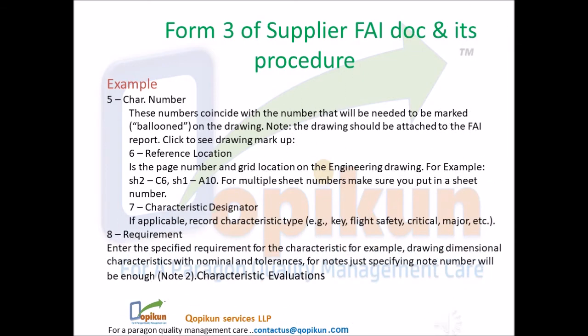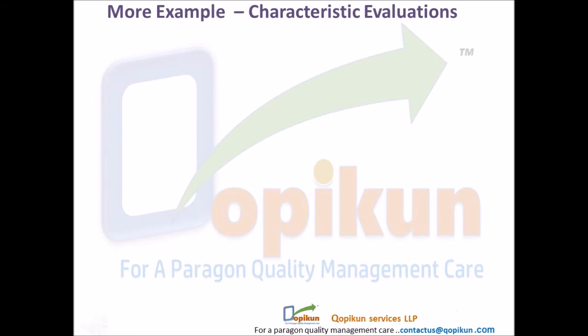Field 7 — characteristic designator: if applicable, record the characteristic type, for example key, flight safety, critical, major, etc. Field 8 — requirement: enter the specified requirement for the characteristic, for example drawing dimensional characteristics with nominal and tolerances. For notes, just specifying the note number will be enough — for example, Note 2. Characteristic evaluations: more examples of characteristic evaluations.